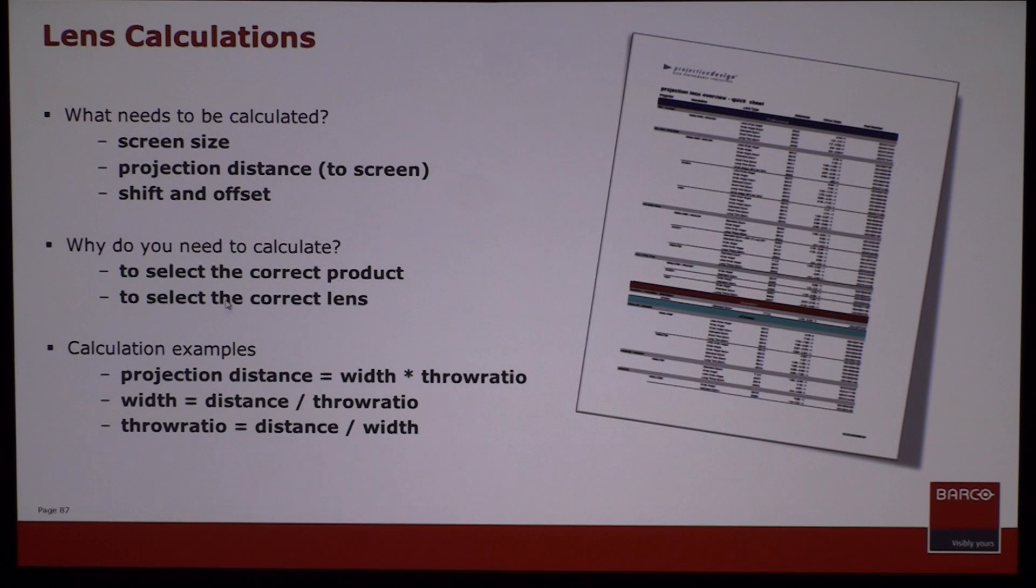Examples of these calculations are the projection distance equals width times throw ratio. If you know the throw ratio and you know the width of the screen, it'll determine your lens. The easier trick is to go to our website and download our lens calculator.